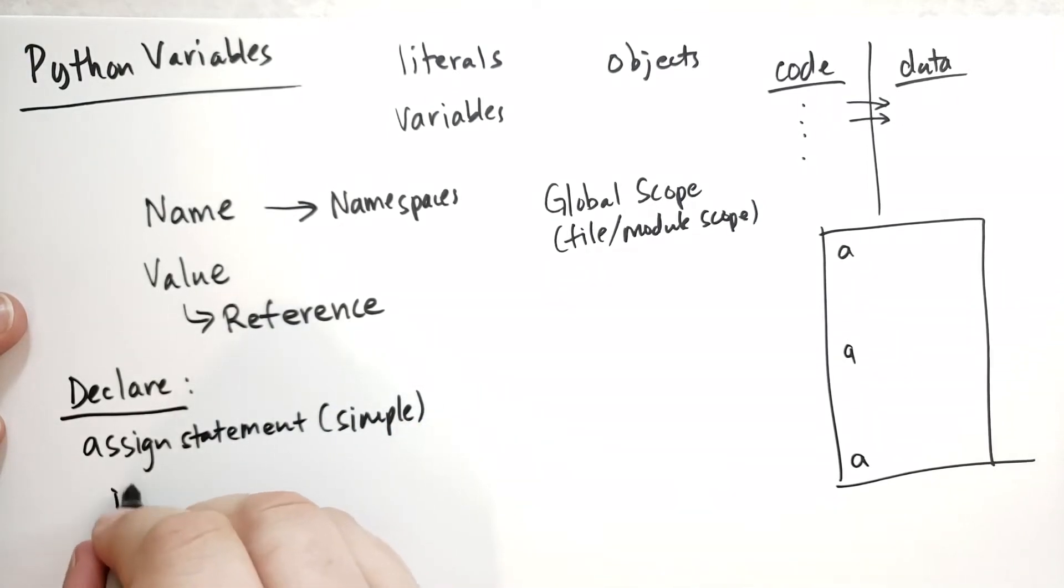So what you do is you take an identifier. You write the equal sign. And then you have some expression that's going to produce some kind of value.